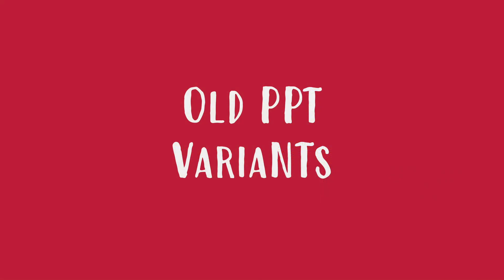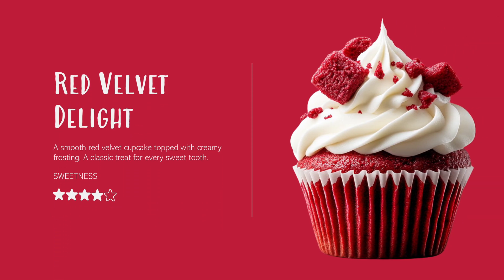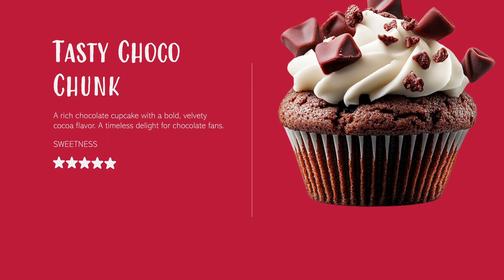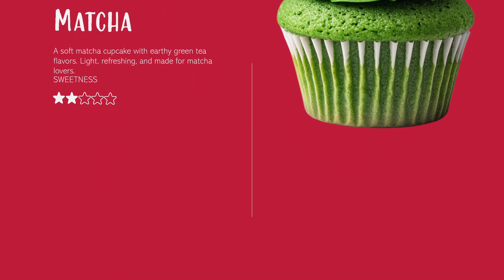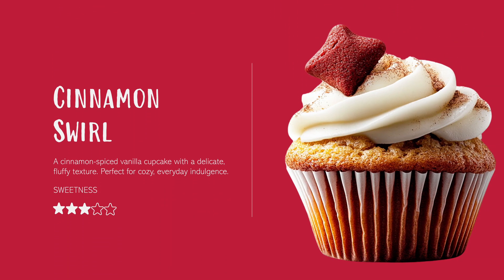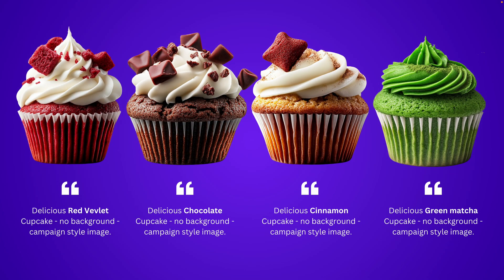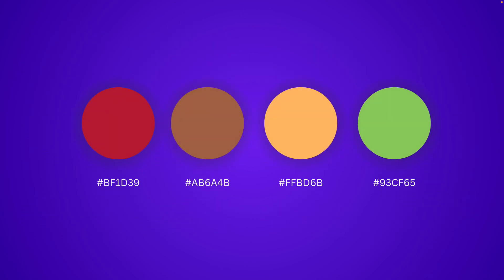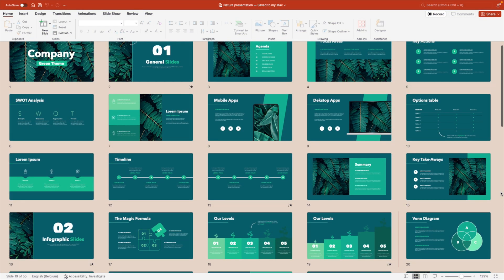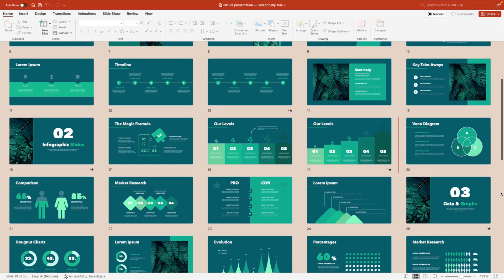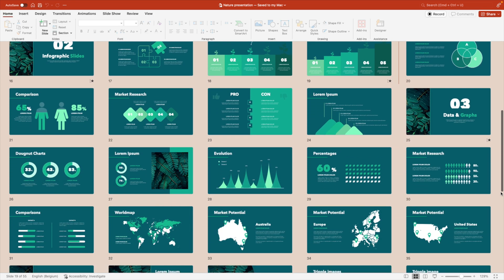For those of you who don't have the morph transition, I will also include a version of how you can do it without morph for older PowerPoint variants, and the effect we create is pretty much the same. For those who want to follow along using the same images, these are generated using Midjourney — I've added the prompts so you can generate them in your own image generator. I've also included the color palette used throughout. If you want to save time, I have templates available via the link in the description below.